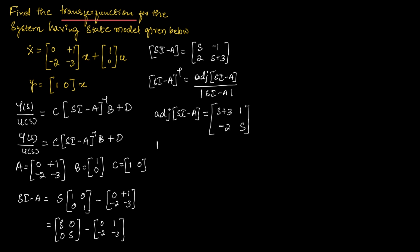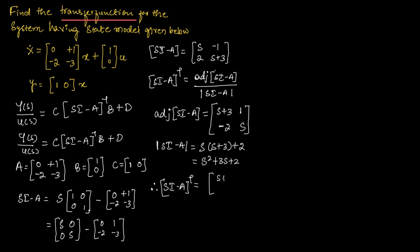Now let us find the determinant of (SI minus A). The determinant is S times (S+3) minus (-2) times (-1), which equals S(S+3) plus 2. Solving this gives S² + 3S + 2. Therefore, (SI minus A) inverse equals [S+3, 1; -2, S] divided by (S² + 3S + 2).